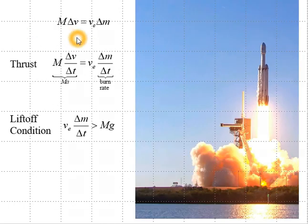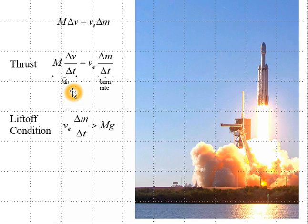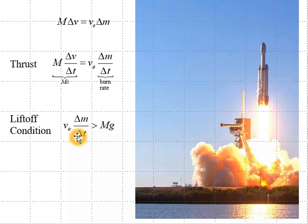This is our conservation of momentum equation. If we divide by delta T — the time required to eject the fuel mass delta M — on the left-hand side we have the rocket thrust: mass times acceleration. On the right-hand side we have the exhaust speed times the burn rate, or dM/dT. The liftoff condition in a gravitational field is that the thrust must be greater than the weight of the rocket: exhaust speed times burn rate greater than Mg.